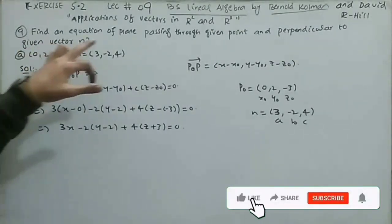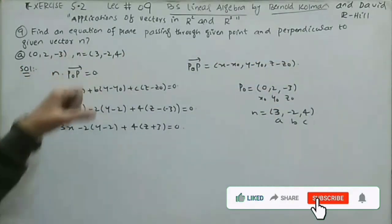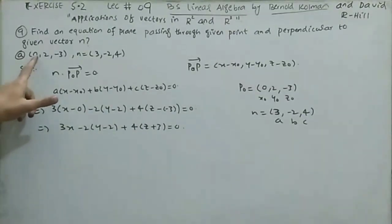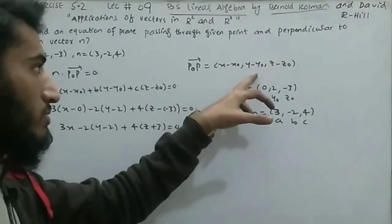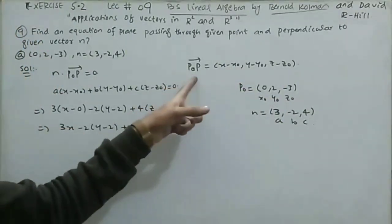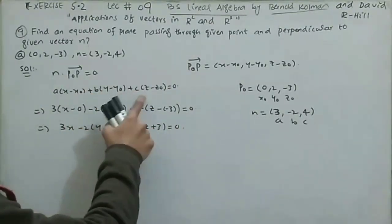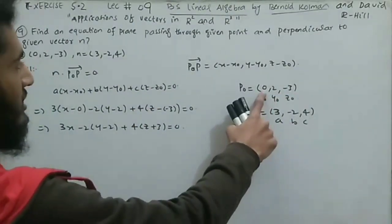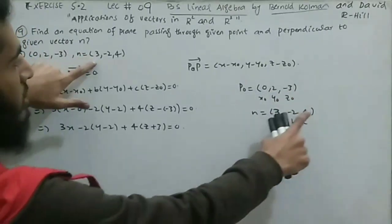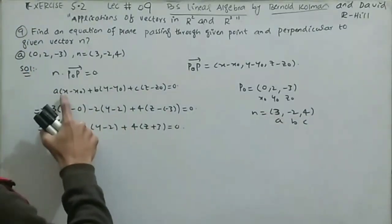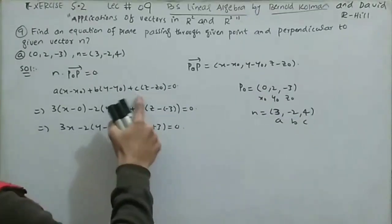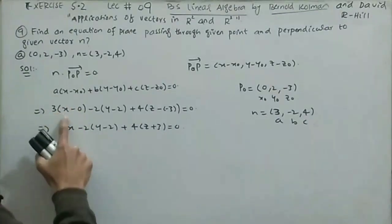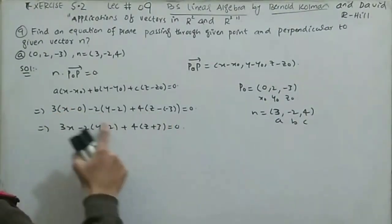Question 9: find an equation of the plane passing through a given point and perpendicular to vector n. For part (a), point P0 = (0, 2, −3) and n = (3, −2, 4). Using n · (P − P0) = 0, which expands to a(x − x₀) + b(y − y₀) + c(z − z₀) = 0, and substituting a = 3, b = −2, c = 4, x₀ = 0, y₀ = 2, z₀ = −3 gives 3(x − 0) − 2(y − 2) + 4(z + 3) = 0. This is the required equation of the plane.